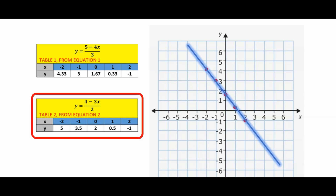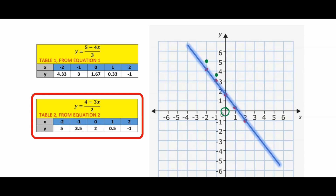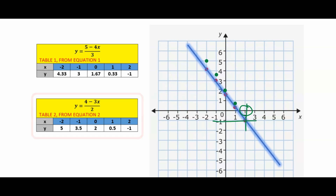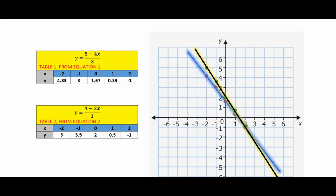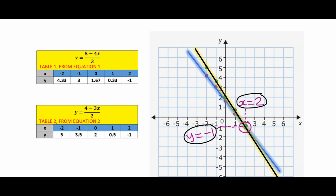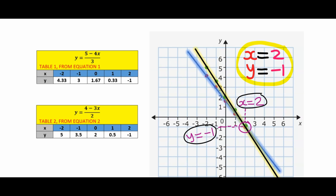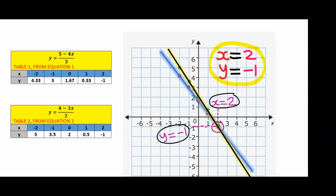For table 2 from equation 2: at x equals minus 2, y is 5; when x is minus 1, y is 3.5; at x equals 0, y is 2; when x is 1, y is 0.5; at x equals 2, y is minus 1. There is a superimposition point here. With a long ruler, join all the points. The two lines meet at x equals 2 and y equals minus 1, which are the same answers obtained using elimination method and substitution method. I believe this was helpful.